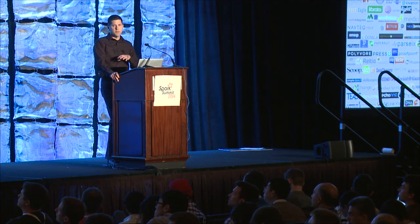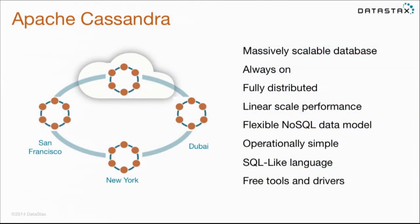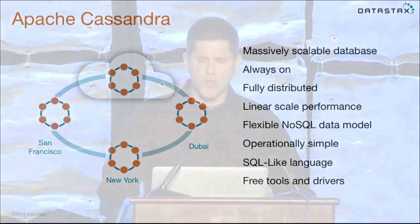Because the architecture doesn't have the concept of a master, every node in a Cassandra cluster is identical. That and other architectural advantages lead to what a lot of folks like about Cassandra: it's always on. You can lose nodes and applications still run; you can lose a whole data center and applications still run. Operational simplicity — not only from an ops person but also from a developer — is key. We have a SQL-like language called Cassandra Query Language, which makes it easy for folks familiar with SQL to get up and running. We also provide free tools, drivers, and open source components so you can get up and running in just about any language.